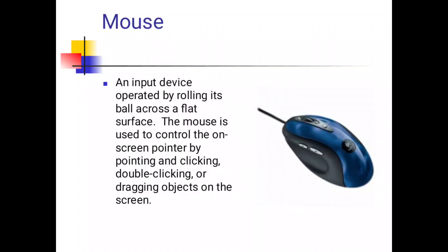Mouse: an input device operated by rolling its ball across a flat surface. The mouse is used to control the on-screen pointer by pointing and clicking, double clicking, or dragging objects on the screen.